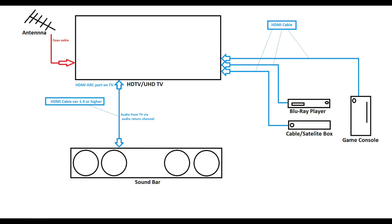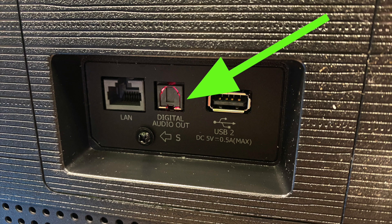Plug your external devices into the TV's non-ARC HDMI ports. Then connect the ARC port to the soundbar and all of your audio will be sent there. As we mentioned earlier, this technology replaces the older optical audio connection.